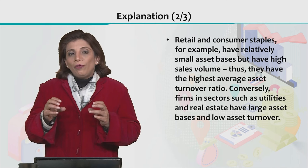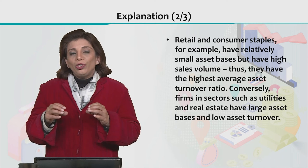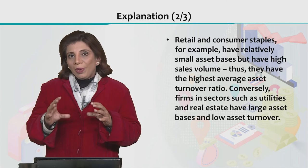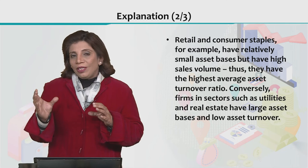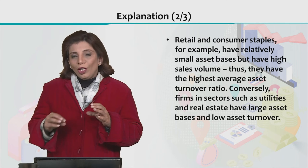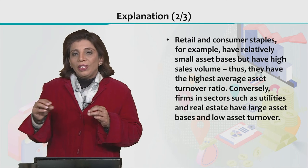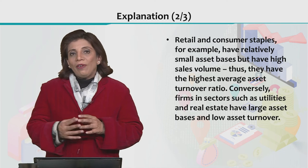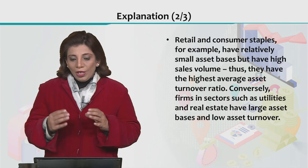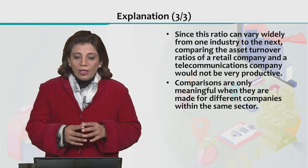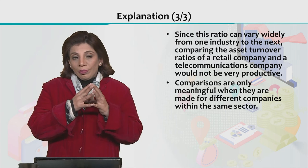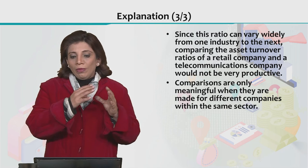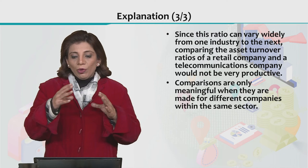That is the reason across sectors you cannot compare firms on the basis of asset turnover ratio. In capital-intensive industries, the total asset value sitting in the denominator — the average total asset — is large, so the overall ratio value will also be lower. The ratio's value can widely vary from sector to sector or industry to industry, and this important thing must be taken into consideration.